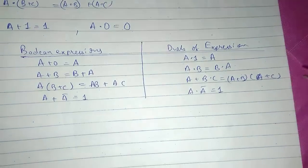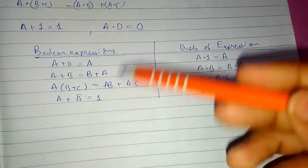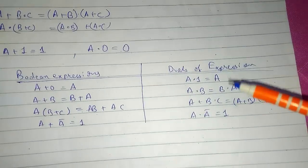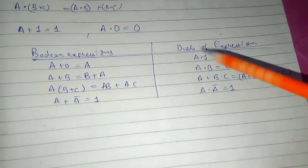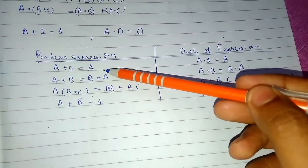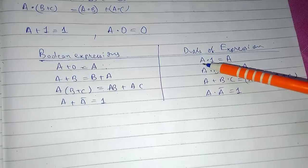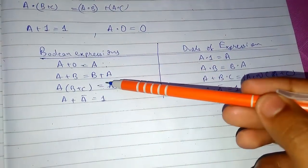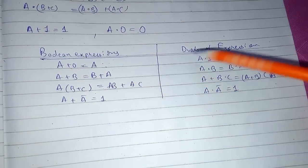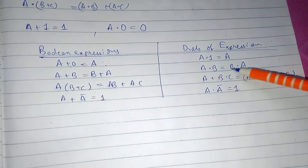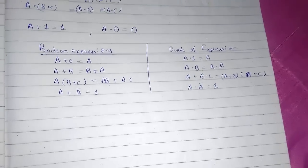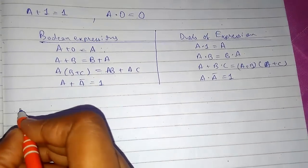This is a small table which I have made. On the left hand side are the Boolean expressions, and on the right hand side is the dual of each Boolean expression. A plus zero equals a, so the dual expression will be a dot one equals a. A plus b equals b plus a is commutative. The dual is a dot b equals b dot a. Similarly, I have done the same for the rest. Now let me show you an example.